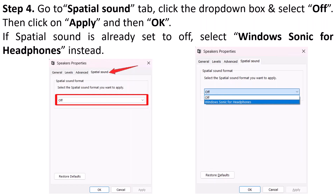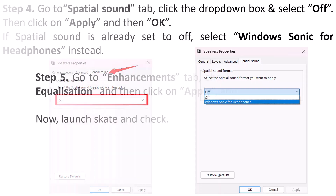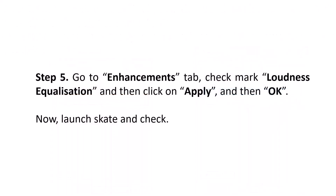Go to the Spatial Sound tab, click the drop-down box and select Off, then click Apply and OK. If spatial sound is already set to Off, select Windows Sonic for Headphones instead. Now go to the Enhancements tab, check Loudness Equalization, then click Apply and OK. Now launch Skate.